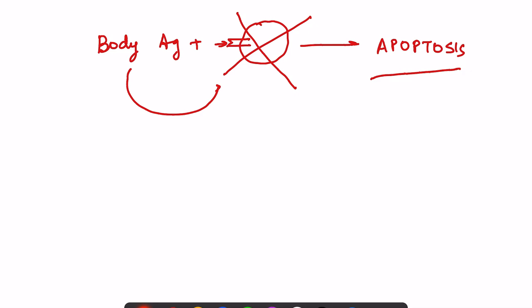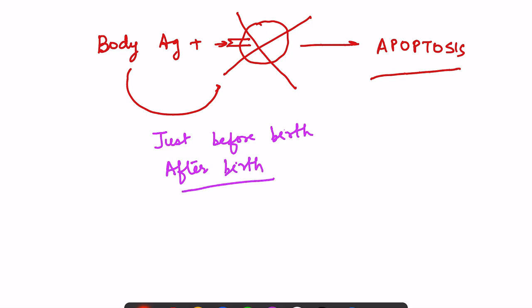All this happens during fetal life, mostly just before birth and for a few months after birth. That is why T cell development is said to mostly take place in the thymus in the first few months after birth. If the thymus is removed during that time, there will be deficient lymphocytes. So the four processes of pre-processing are: proliferation, formation of CD4 and CD8 cells, attainment of diversity, and negative clonal selection.